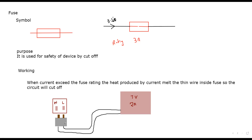When you plug in your television, it requires 2 amperes to work properly. But suddenly from the live wire, 5 amperes is coming. This 5-ampere current is very high for the television and it will damage the circuit of the television. If the television circuit is damaged you have to replace the television because the whole circuit is damaged.